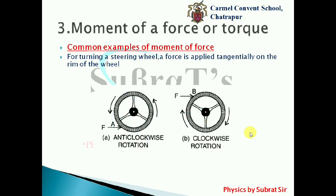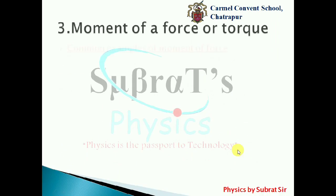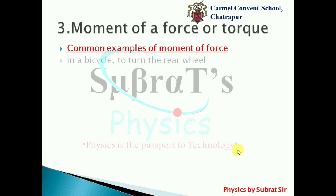The next example is turning a steering wheel. A force is applied tangentially on the rim of the wheel. If you apply a force tangentially at the bottom of the wheel it turns anticlockwise, but when you apply a force at the top of the rim it rotates in the clockwise direction.